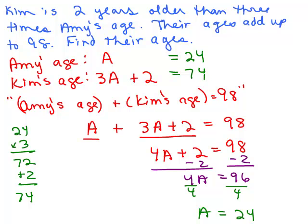All right, now let's see if this makes sense, given the original word problem. So Kim is 2 years older than 3 times Amy's age. Is that true? Is 74 2 more than 3 times Amy's age? Well, yes, actually over here, right there is where we showed it. We did 3 times Amy's age and added 2. Also, do their ages add up to 98? Well, let's check that out. Is 24 and 74 98? Yes.